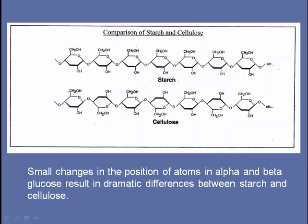Looking at the difference between starch and cellulose: in starch made of alpha-glucose, all the sugars are oriented in the same direction — the oxygens are all on the same side. In cellulose, the oxygen location alternates because the beta-glucose molecules are flipped relative to one another. These small changes in the position of atoms in alpha and beta-glucose result in dramatic differences between starch and cellulose in both structure and function. We have the enzyme to break the starch bond, but not the cellulose bond.